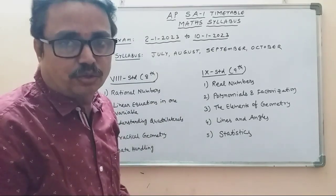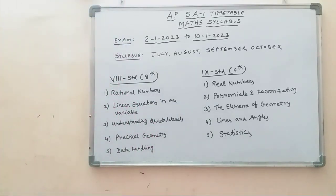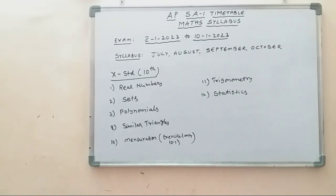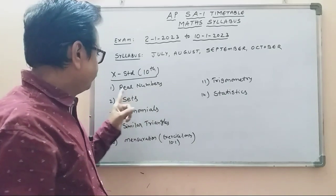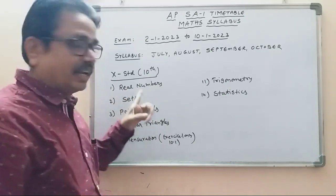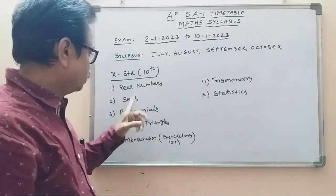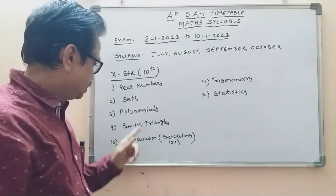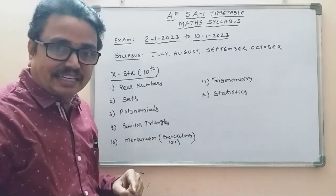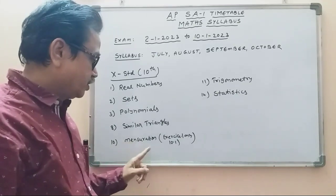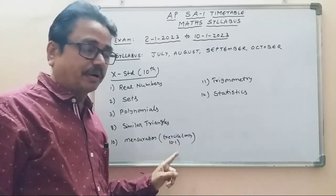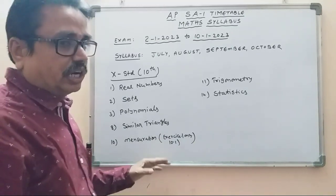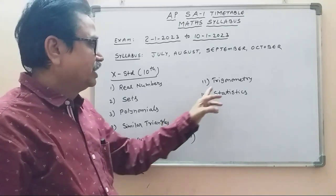This is 10th Class. Chapter 1: Real Numbers. Chapter 2: Sets. Chapter 3: Polynomials. Chapter 8: Similar Triangles. Chapter 10: Mensuration. And October — Chapter 10.1 Real Numbers.